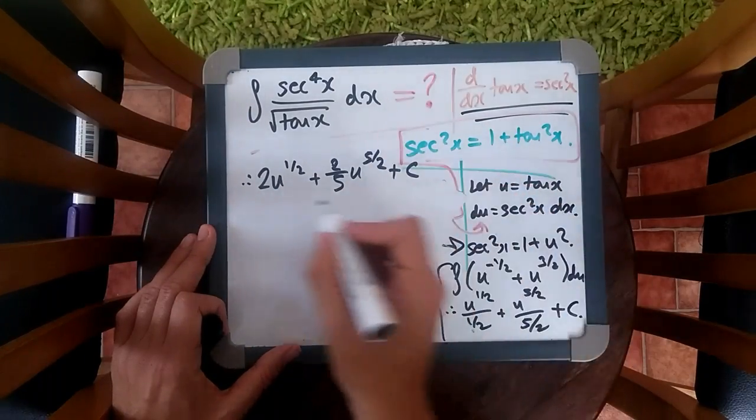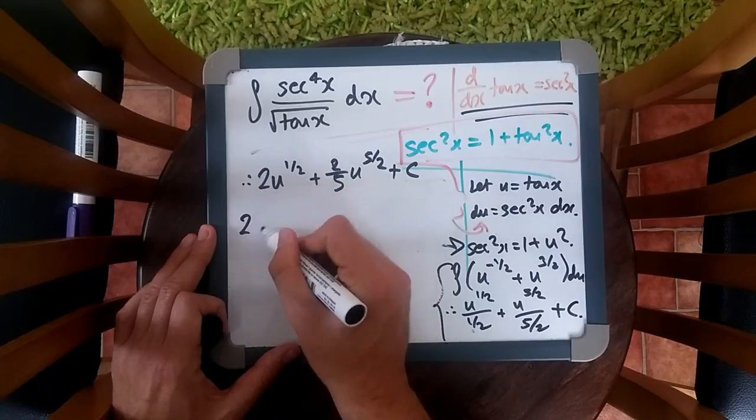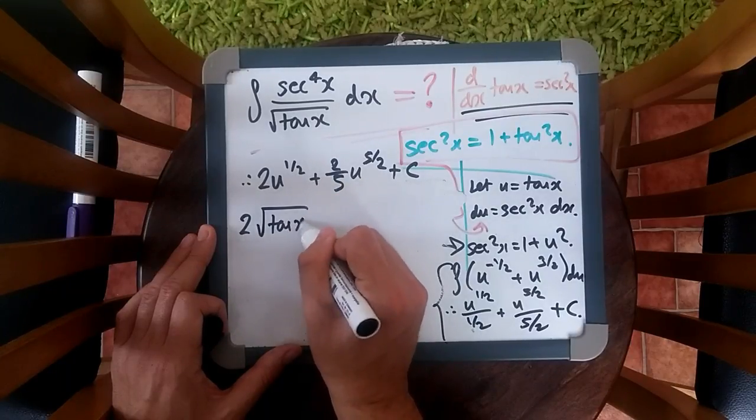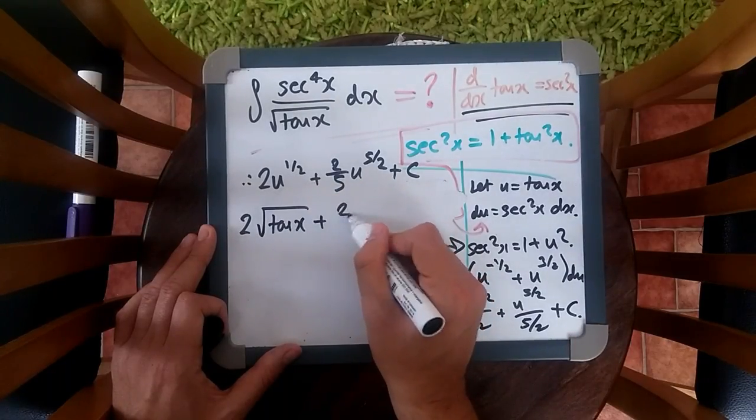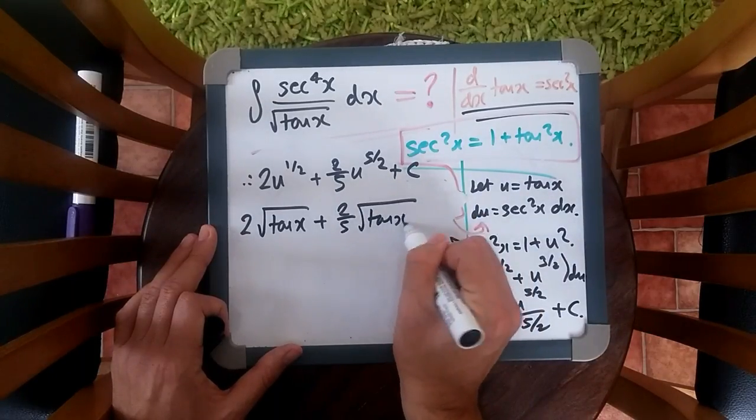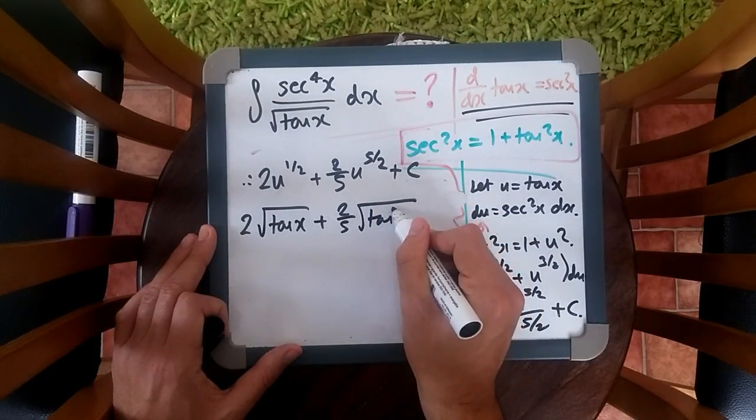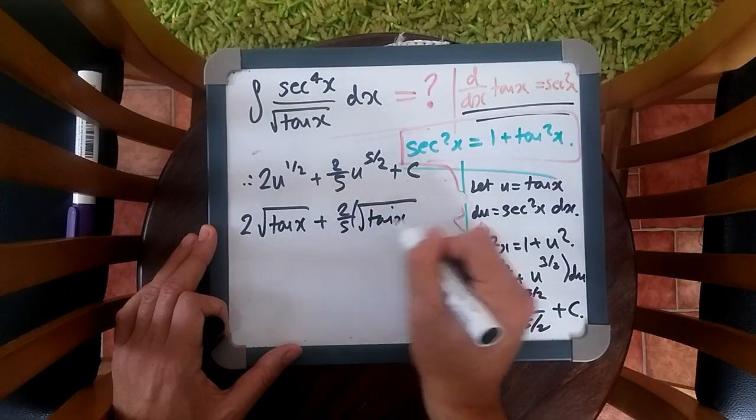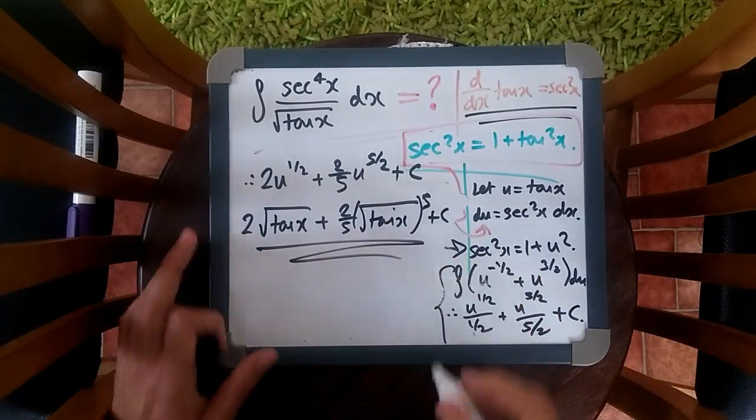u is tan x, so we get two root tan x plus two fifths root tan x all to power of five plus c. And that's it, guys.